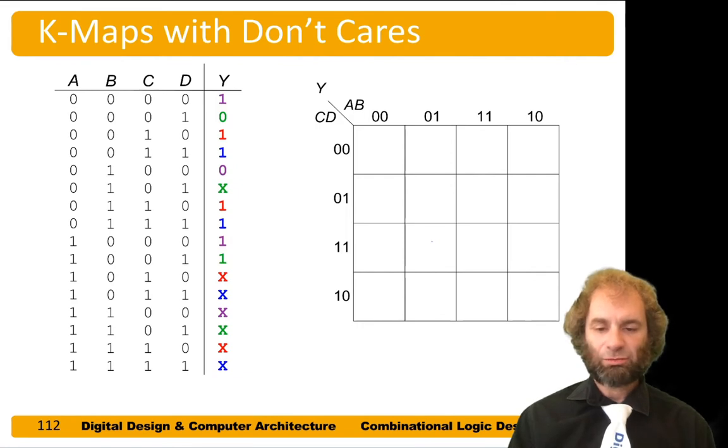Here we have a truth table of four inputs, and we see that some of the outputs are don't cares. Let's apply this to the Karnaugh map.